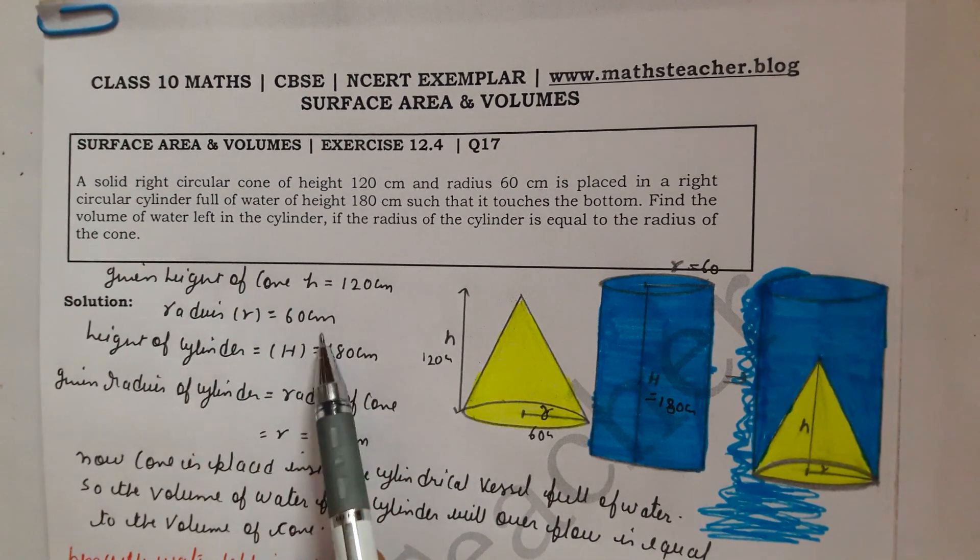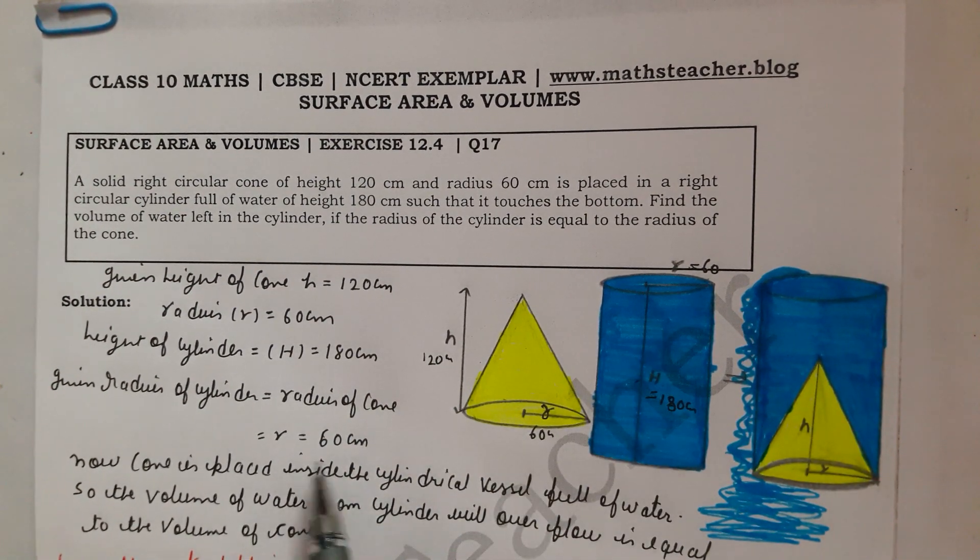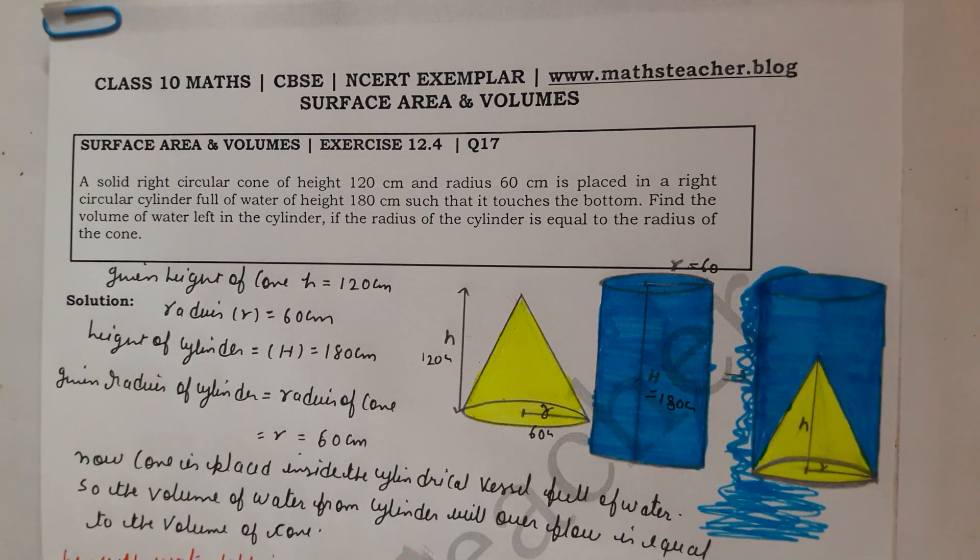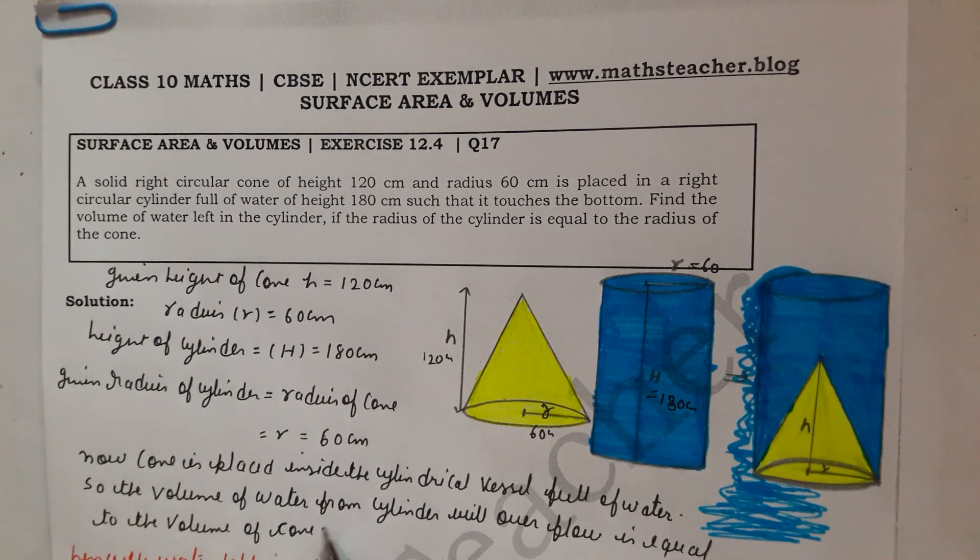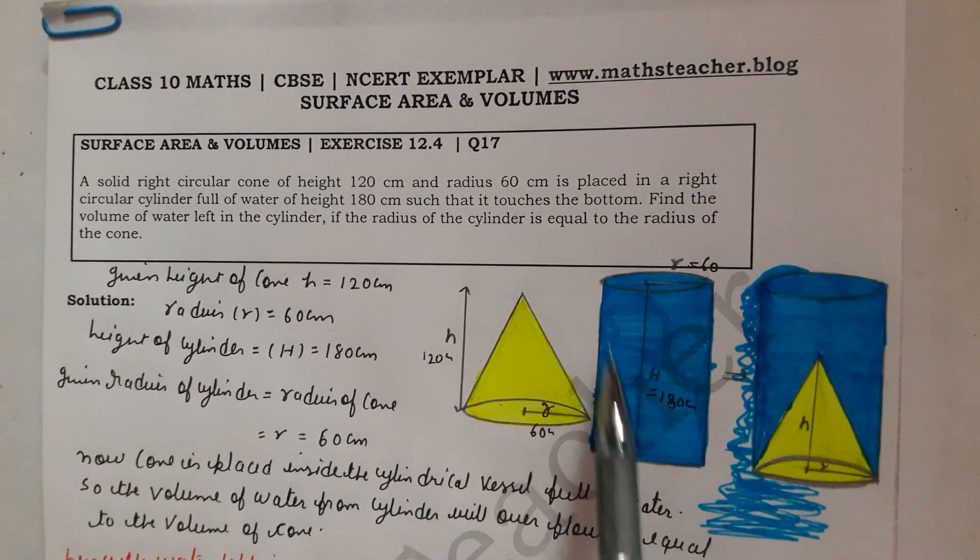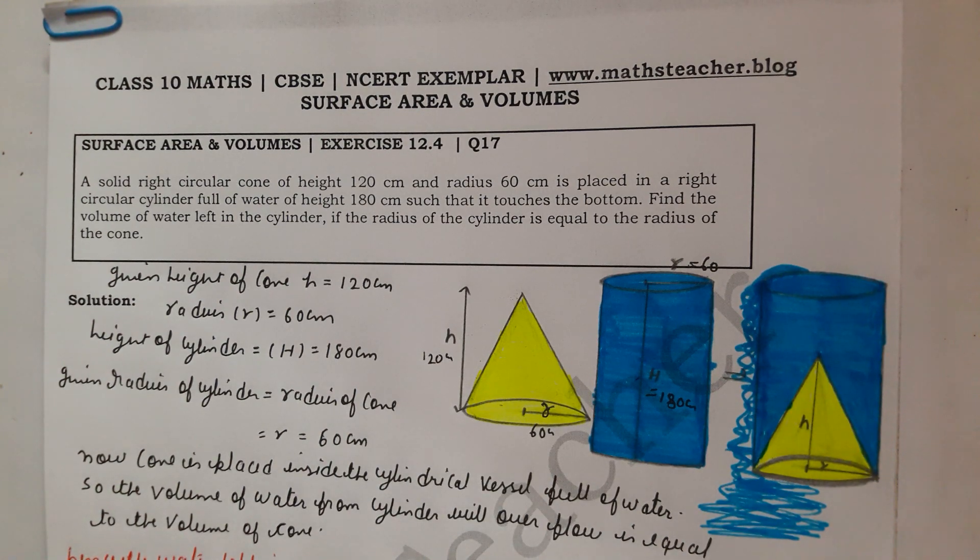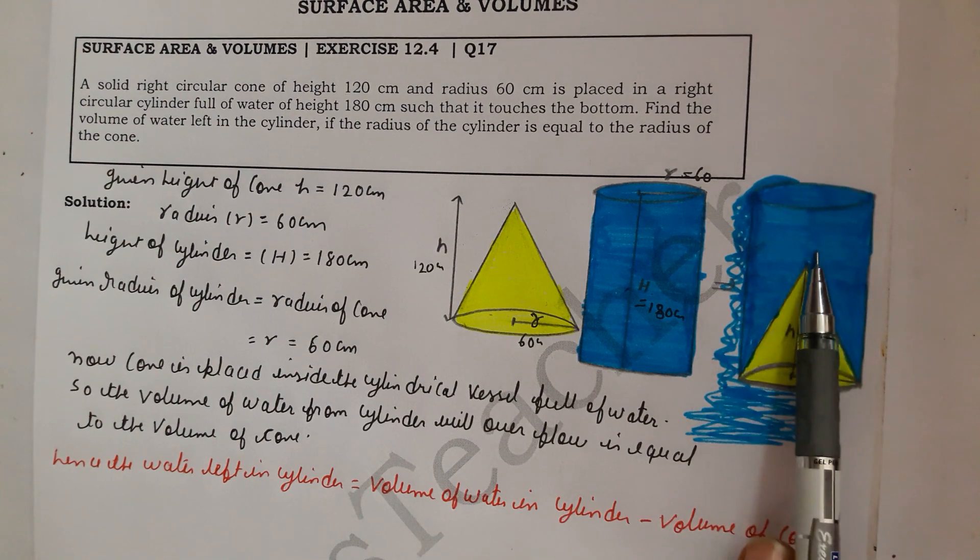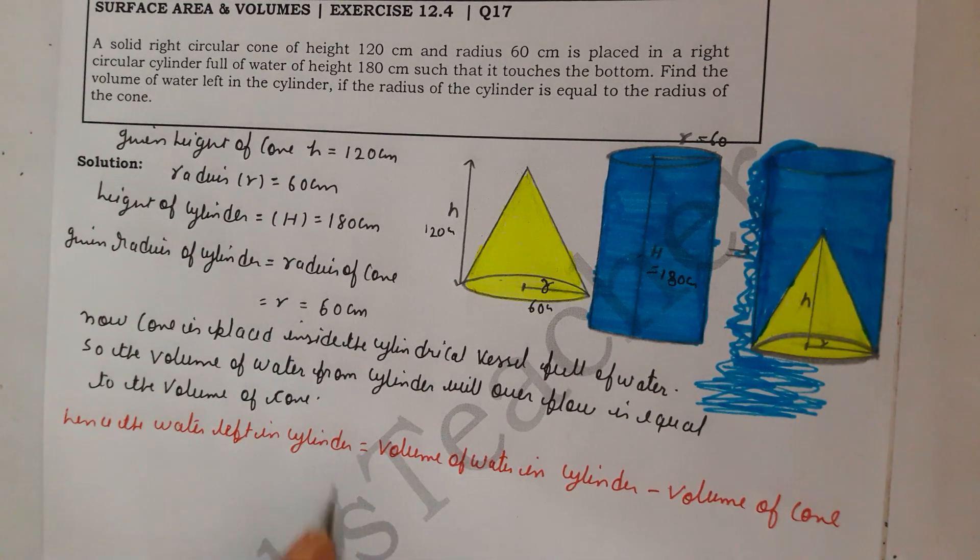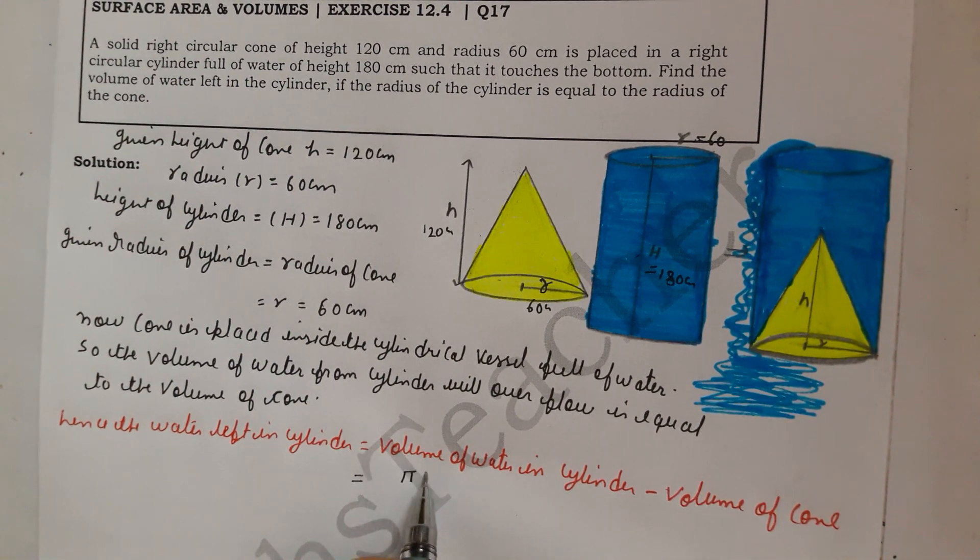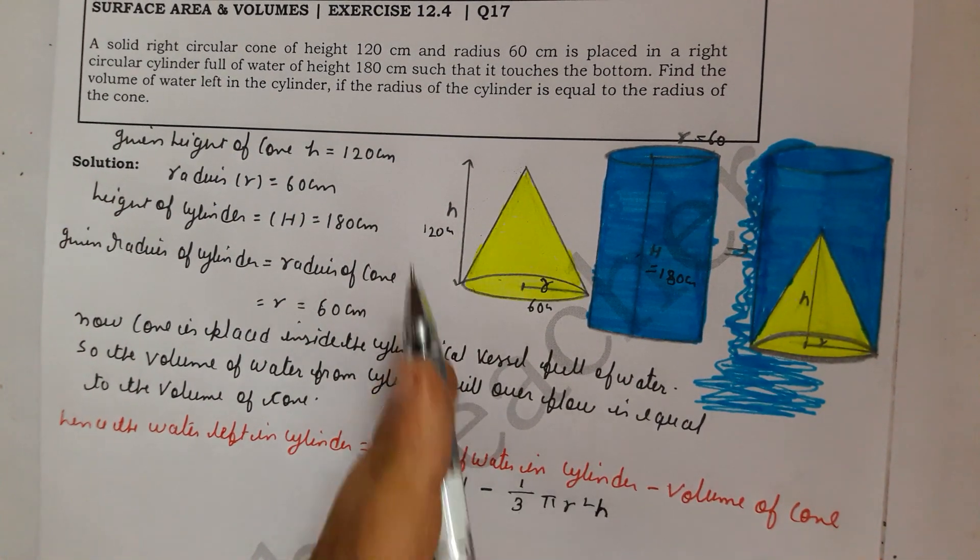Given: the height of the cone H is 120 cm, radius R is 60 cm, then the height of cylinder H is 180 cm. The question says both radius is equal, so both radius R is 60 cm. Now, cone is placed inside the cylindrical vessel full of water. So the volume of water from cylinder that will overflow is equal to the volume of cone. The volume of water left in cylinder equals πr² times height of cylinder H minus volume of cone which is 1/3 πr²h.